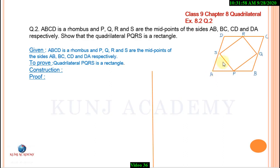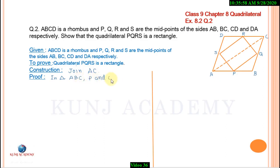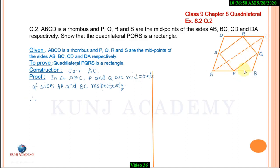To prove quadrilateral PQRS is a rectangle, we consider triangle ABC. In triangle ABC, P is the midpoint of side AB and Q is the midpoint of side BC. Therefore, PQ is parallel to AC and PQ equals half of AC, by the midpoint theorem.